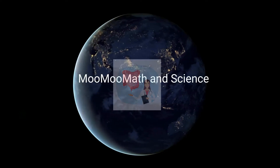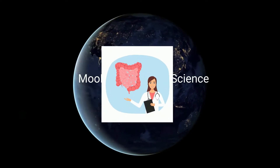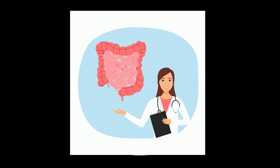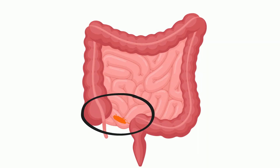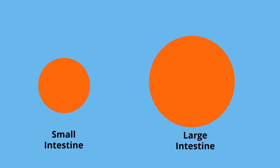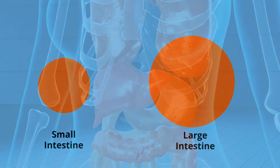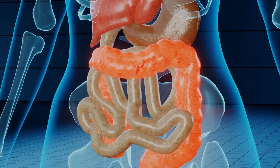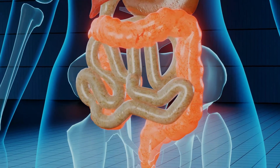Welcome to Moomoo Math and Science, and this is all about the large intestine. After passing through the small intestine, digested food travels into the large intestine. Your large intestine is roughly 9 feet in length, but it gets its name because it has a larger diameter than the small intestine. Your large intestine is also called the colon, and it is divided into several sections.